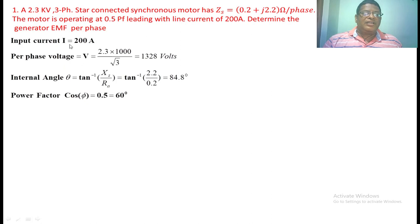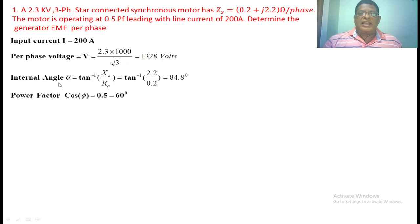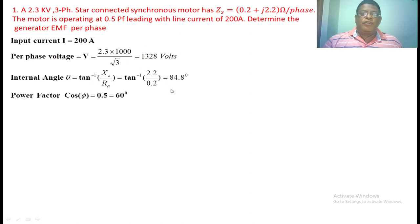The line current is given as I equal to 200 amperes. First you have to find out the per phase voltage: line voltage divided by root 3, getting 1328 volts. Next you have to find out the internal angle theta equal to tan inverse of Xs by Ra. Xs value is 2.2 and Ra value is 0.2, substituting those values we are getting 84.8 degrees.